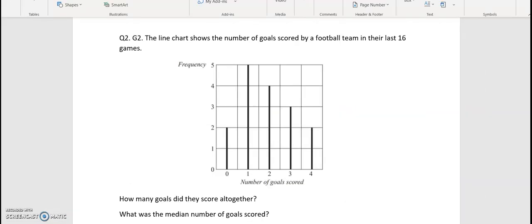In question number 2 we have the line chart shows the number of goals scored by a football team in the last 16 games. How many goals did they score altogether? So there are 16 games in total. We have the number of goals scored. So 0 goals were scored twice. It could be the first match or maybe the second, third but I'm just going to put them in order like this. So we have another match with 0 goals and then we have 5 matches with just 1 goal.